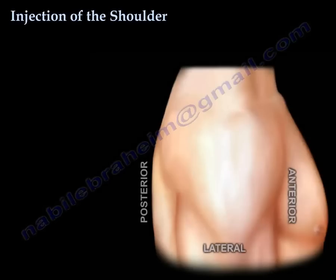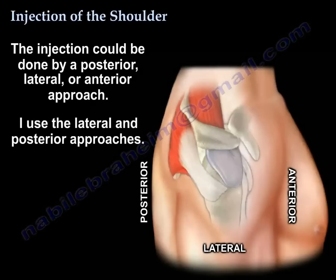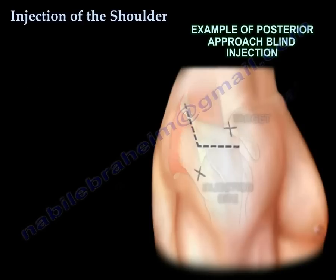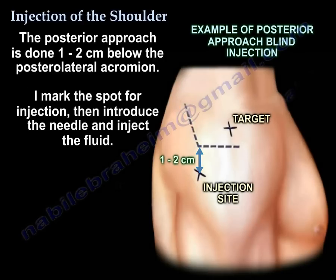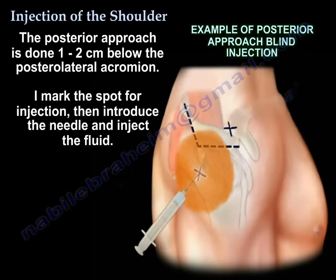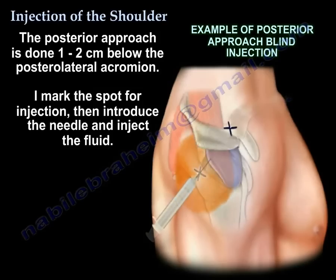The injection can be done through a posterior, lateral, or anterior approach. I use the lateral and the posterior approach. The posterior approach is one centimeter below the posterolateral acromion, and this is how I find the spot — I mark it, introduce the needle, and inject the fluid.